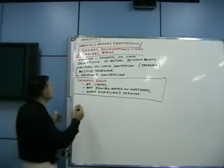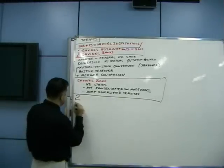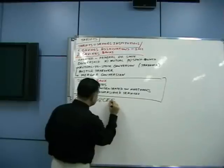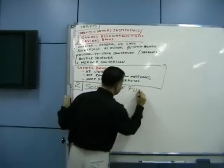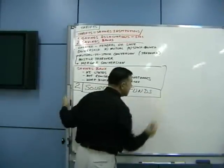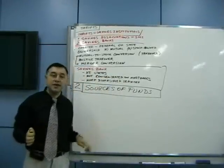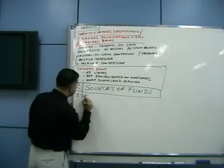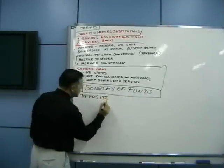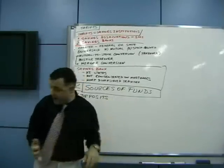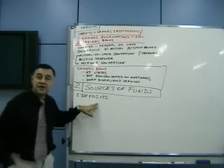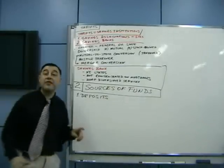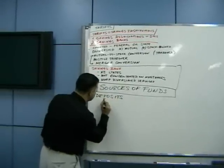The next is sources of funds, which means liabilities — how do they raise funds? First and foremost is deposits, for the simple reason that they are depository institutions. They have savings deposits, time deposits, passbook deposits, and also retail CDs, which are very important.